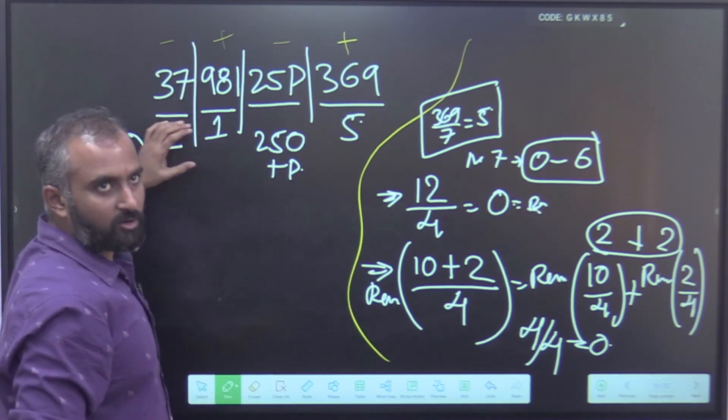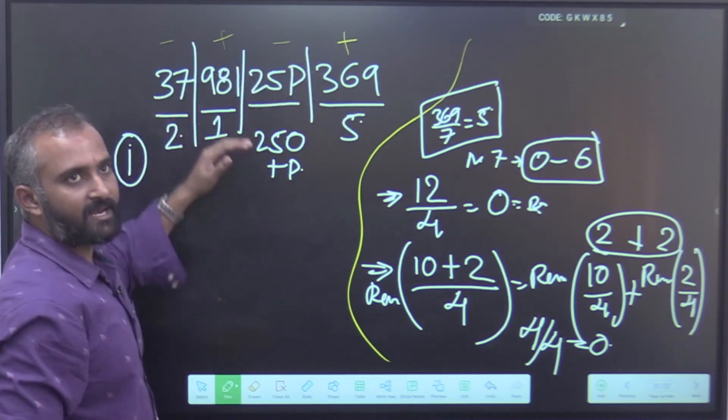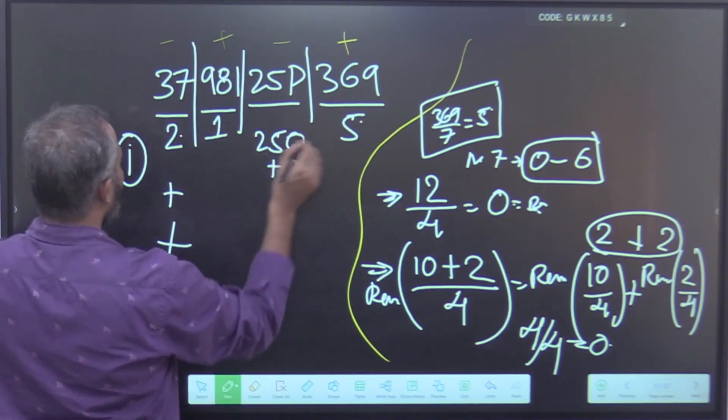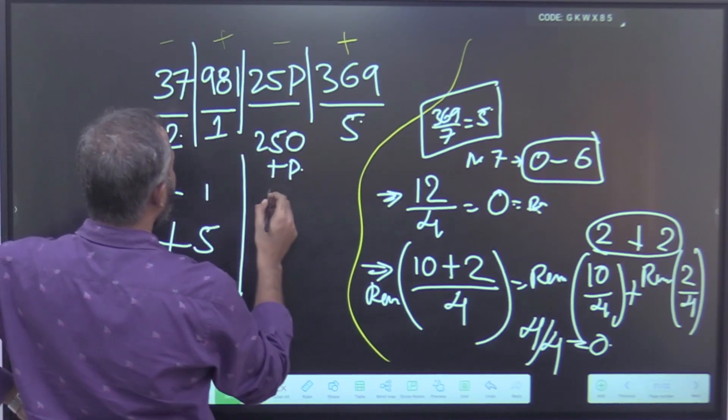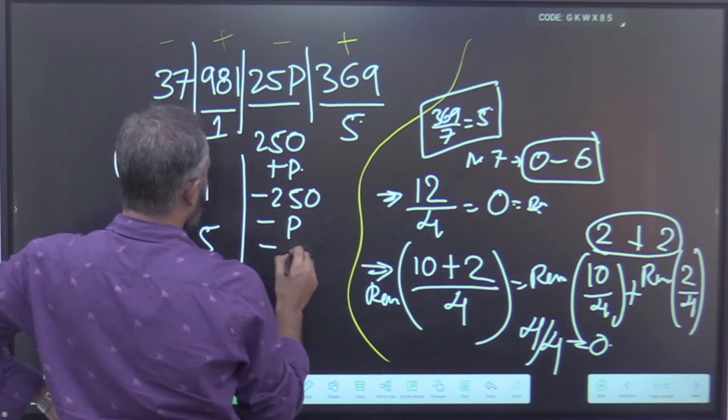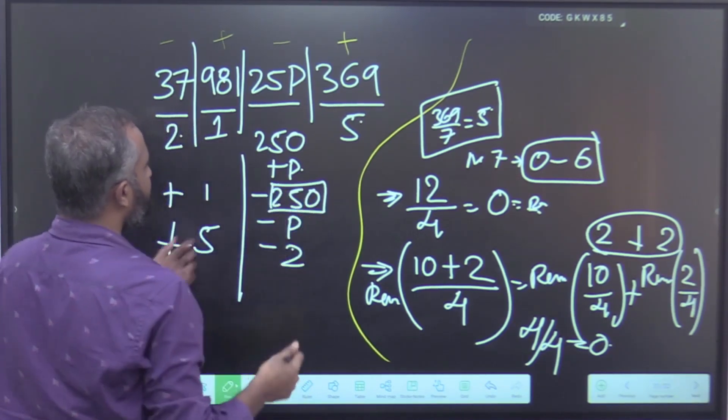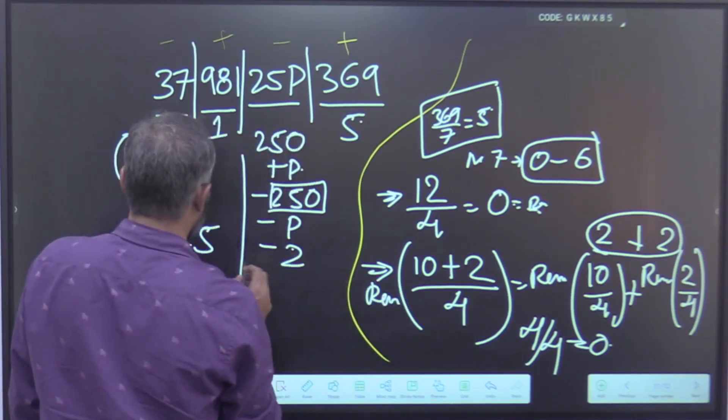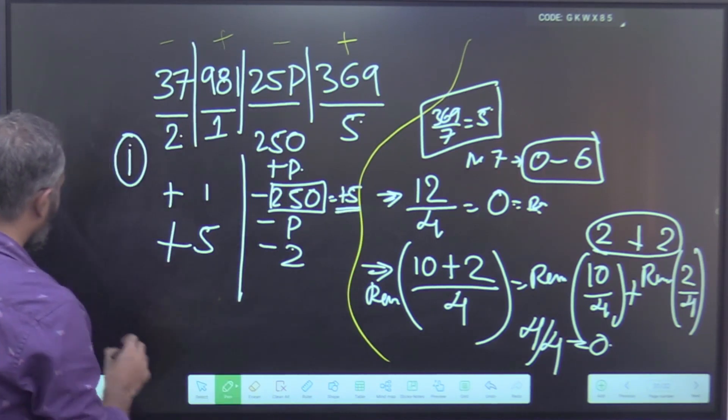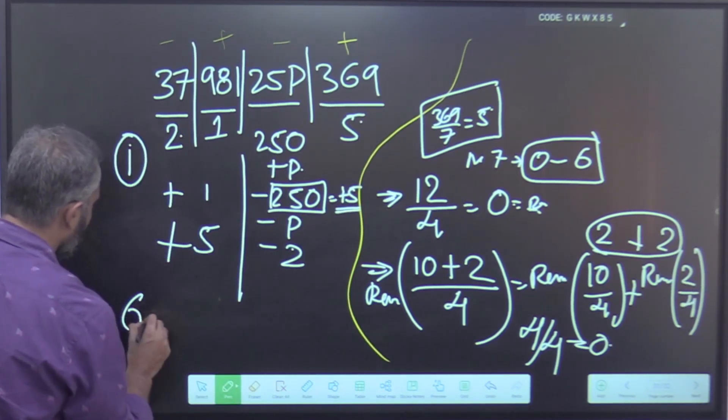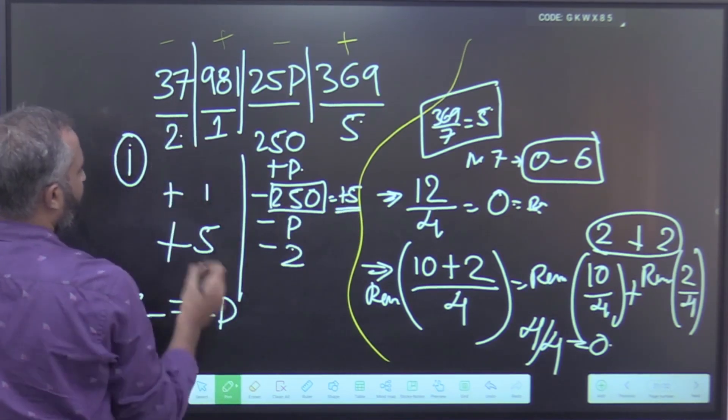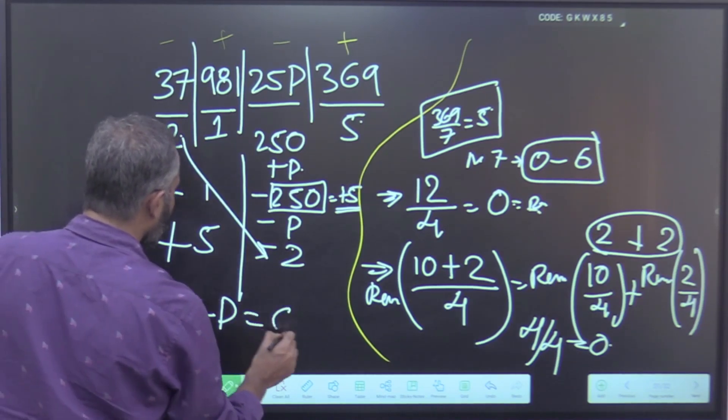Now, if you are not gone this step, the option would be 981 plus 369 and then finding out the remainder. But here, continue the same process: what we get, add all the plus forms, 1 plus 5, add all the negative, this negative is minus 250 minus P minus 2. Here 250, remember, what is the remainder of 250? It is 5 again.